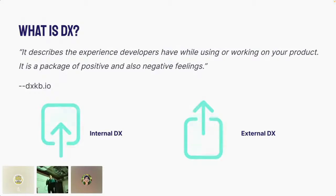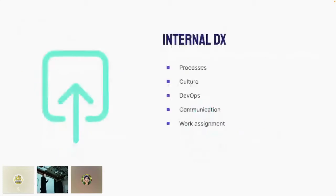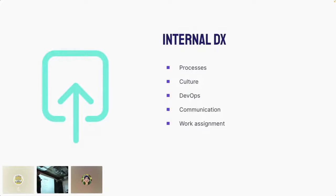Overall, it's about how well a developer can work with a product or service. There are two main areas of developer experience: internal and external. The internal one covers anything that happens within the team — processes the developer has to follow, company culture, communication culture, and the setup of CI/CD pipelines they push their code through.